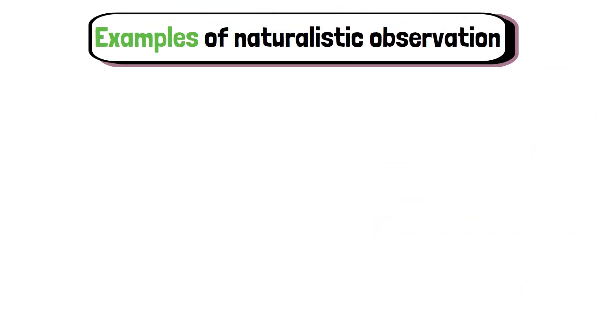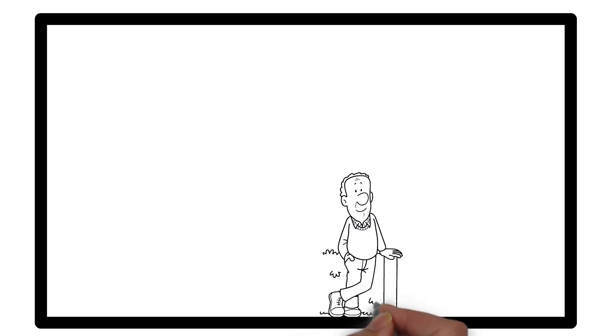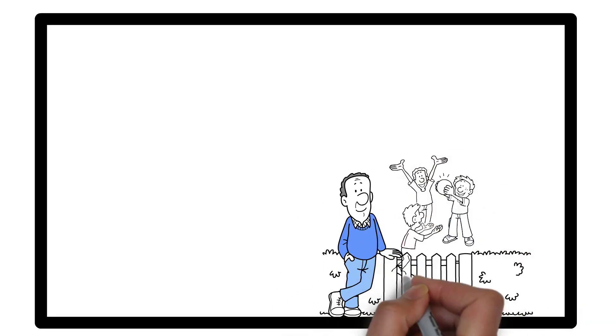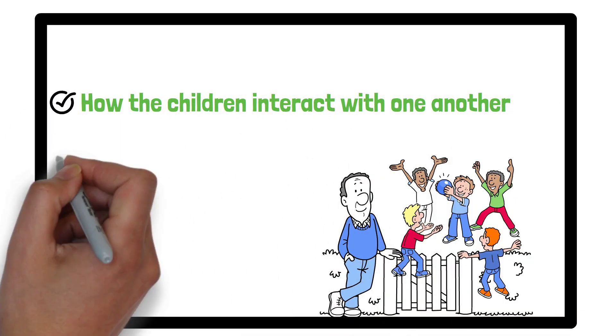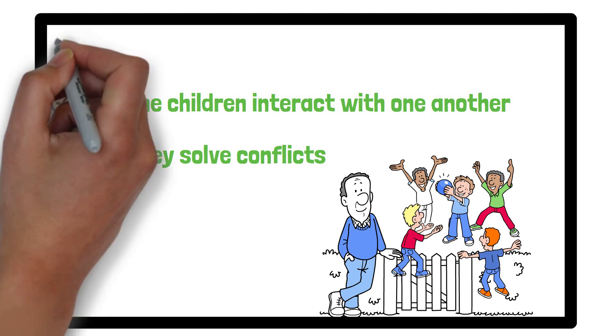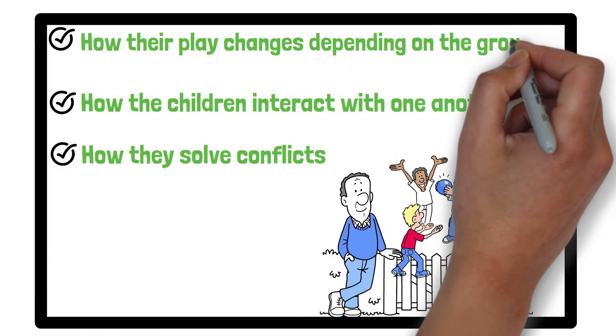Now let's look at some examples to better understand how naturalistic observation works. Imagine a researcher observing children playing at a local park. Without interacting with them, the researcher can take notes on how the children interact with one another, how they solve conflicts and how their play changes depending on the group dynamic.